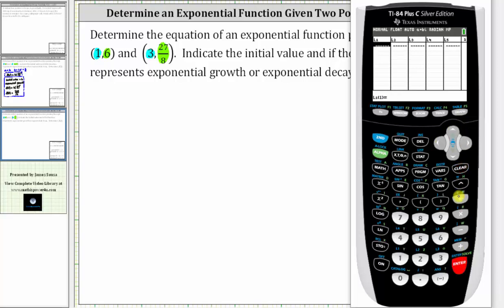Now we enter the x values in L1, which are one, enter, three, enter. Right arrow, the y values or function values in L2, which are six, enter, and 27 divided by eight, enter. And now we go back to the home screen by pressing second mode for quit.